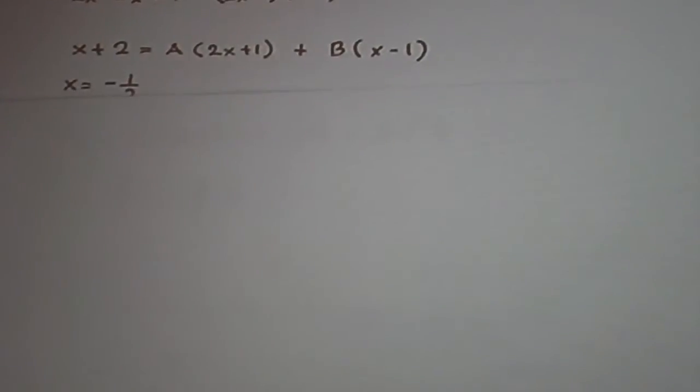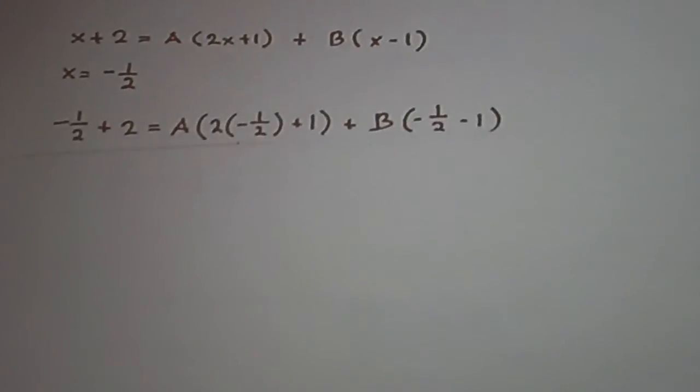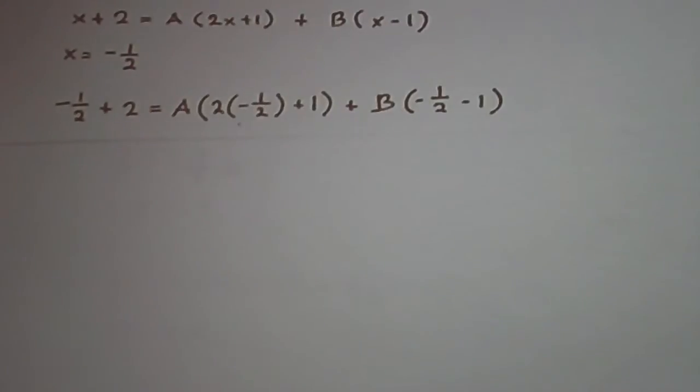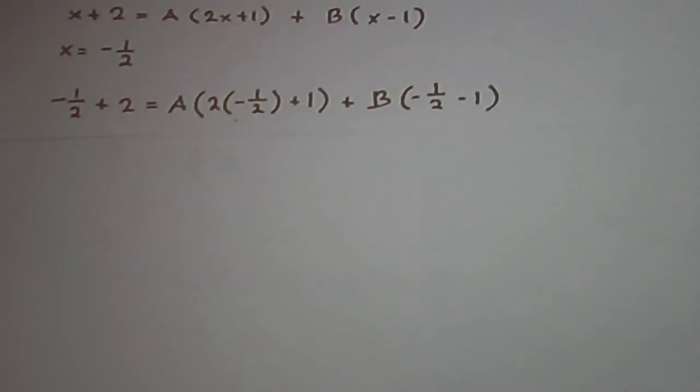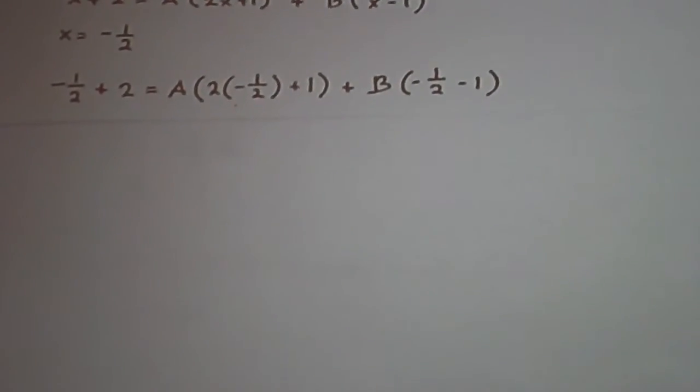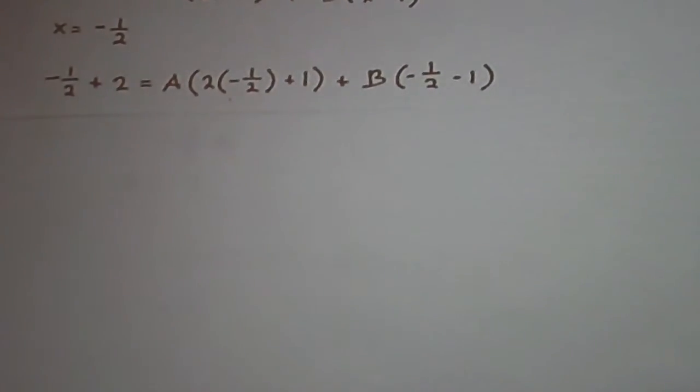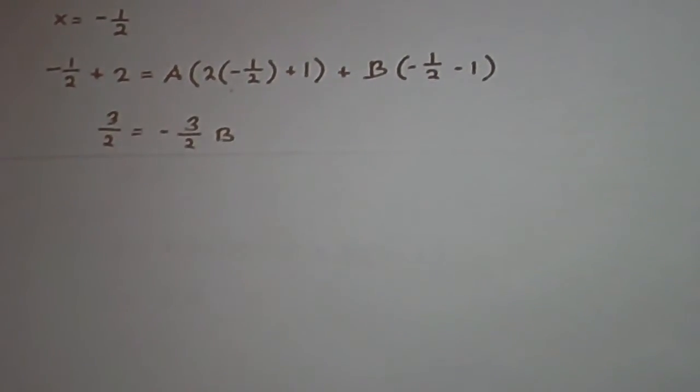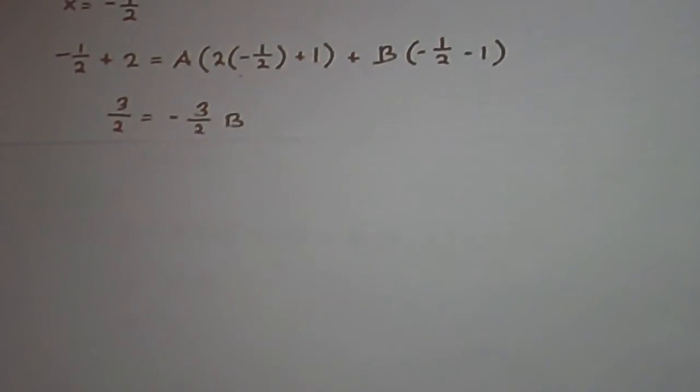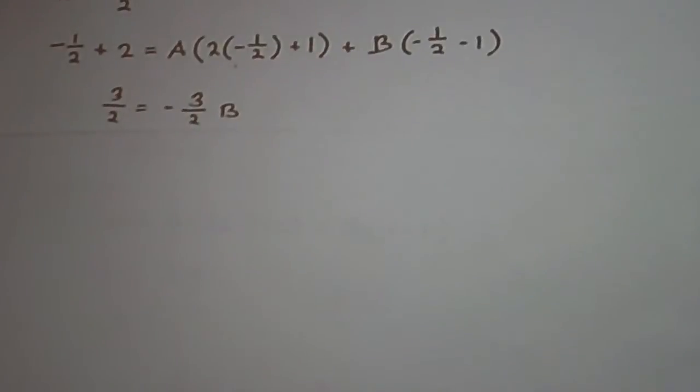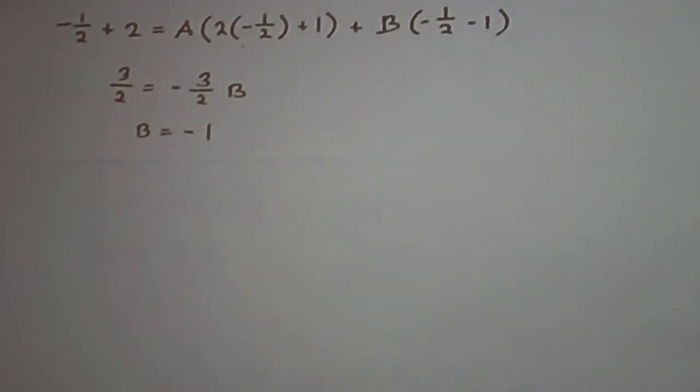In order to solve for B we set x equal to negative 1/2 and we'll get negative 1/2 plus 2 equal to A times 2 times negative 1/2 plus 1 plus B times negative 1/2 minus 1. Which will give us 3/2 is equal to negative 3/2 times B. And we divide both sides by negative 3/2. We'll be left with B is equal to negative 1.